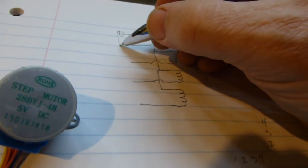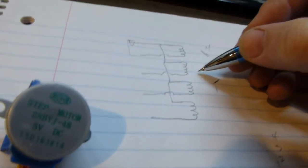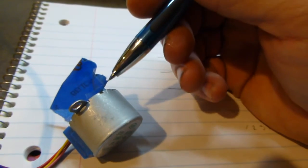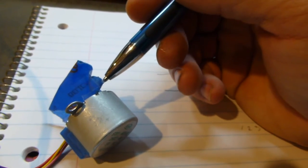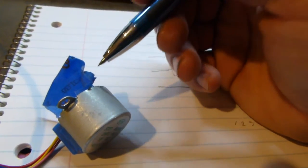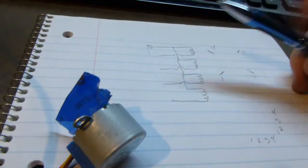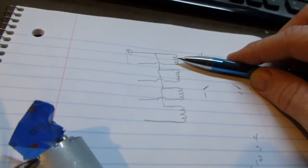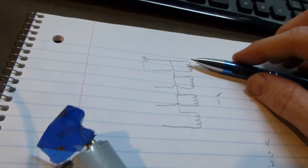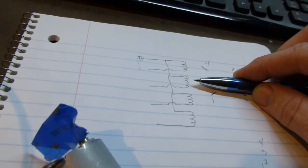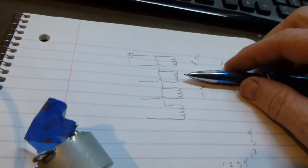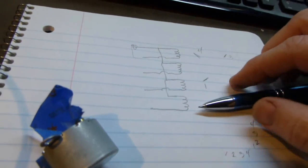You put power between this wire and this wire and the armature—well, is this armature or stator? Armature, I think—of the motor, which is the moving part of the motor, jumps to line up with that one. Then you remove power from that one and you stick it on the next one, and it moves to that one. When you put power on that one, it moves to this one, and then this one.